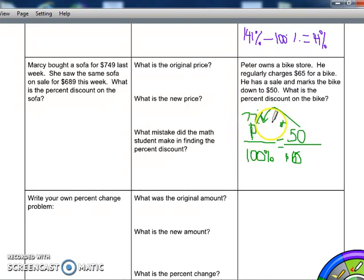But that means that the percent of the price, it's 77% of the original. But that's not the discount. That's what you pay. So to find the discount, to find that change, I need to subtract. So I would do 100 minus 77%.